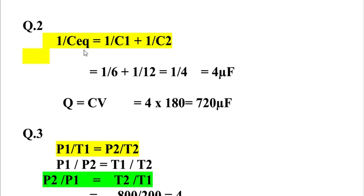In series, the equivalent capacitance: 1 over C-equivalent equals 1 over C1 plus 1 over C2. That's 1 over 6 plus 1 over 12, which equals 1 over 4. So C-equivalent equals 4 microfarads.